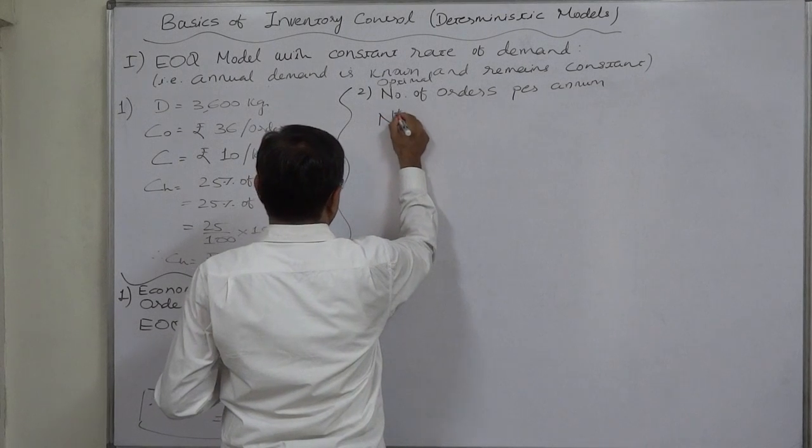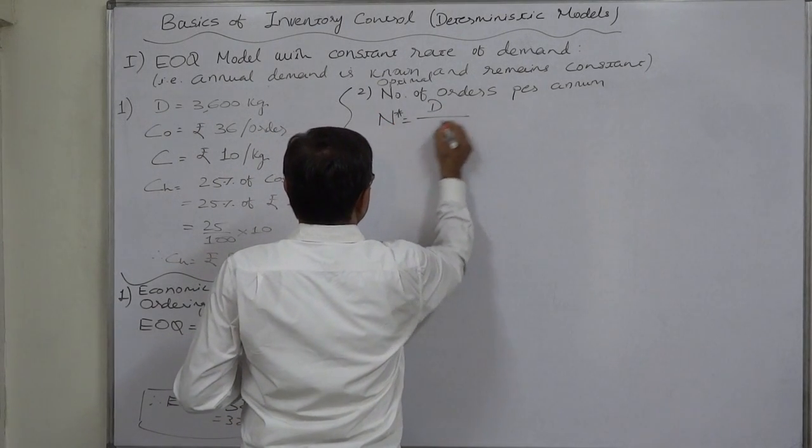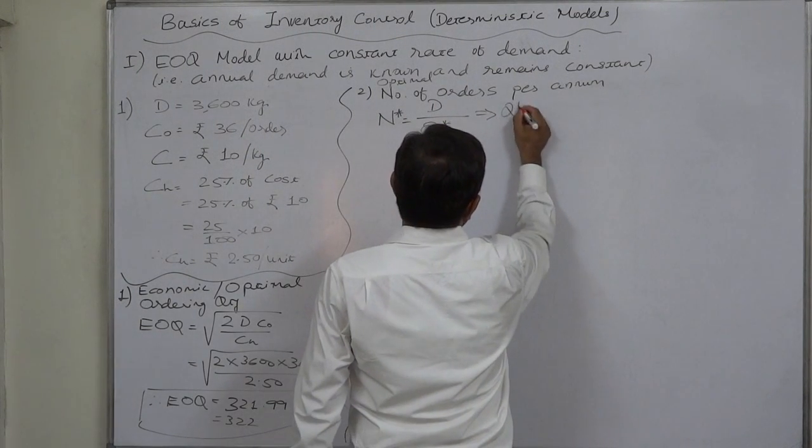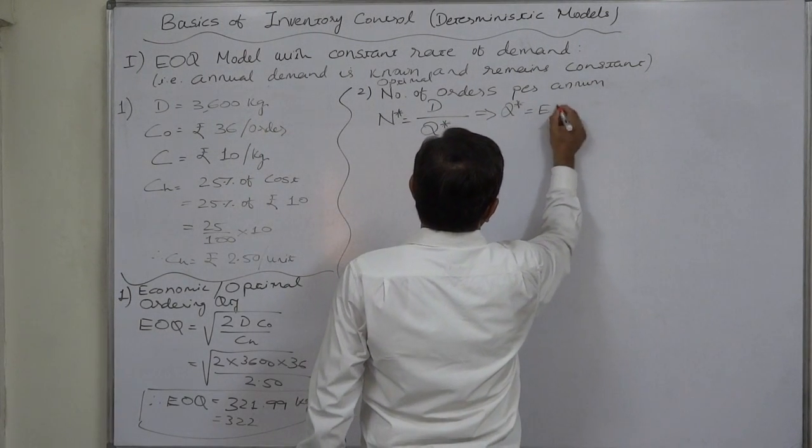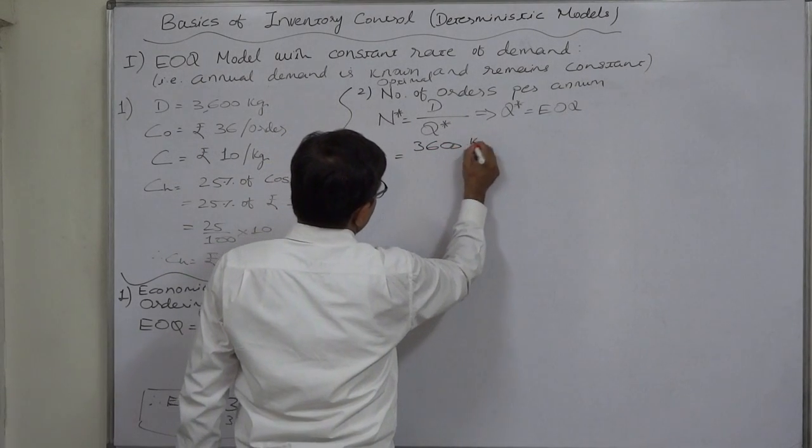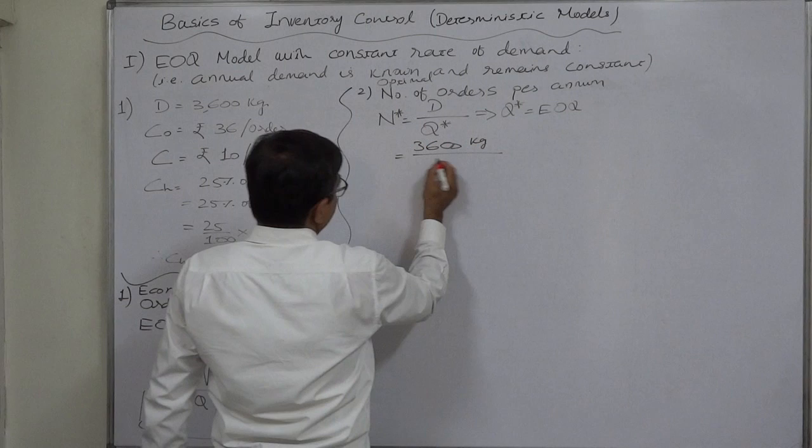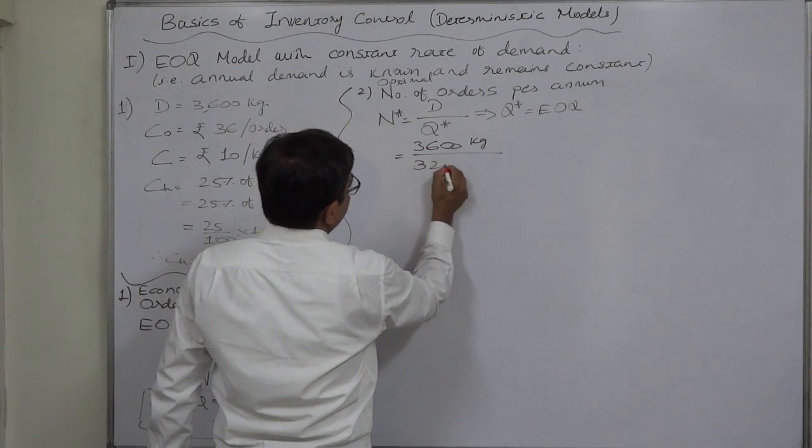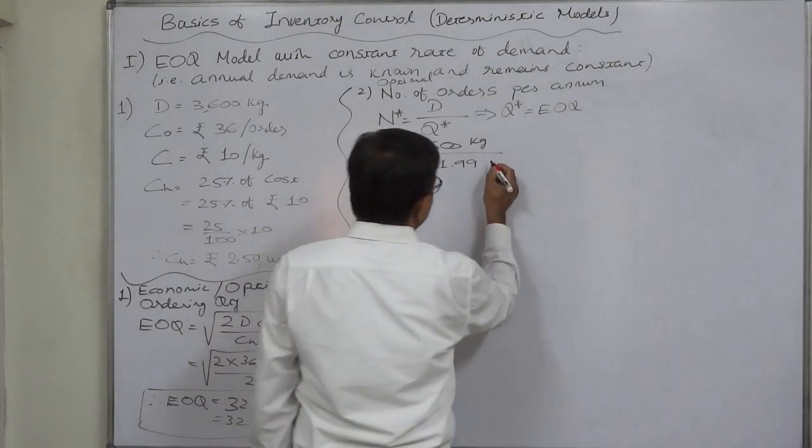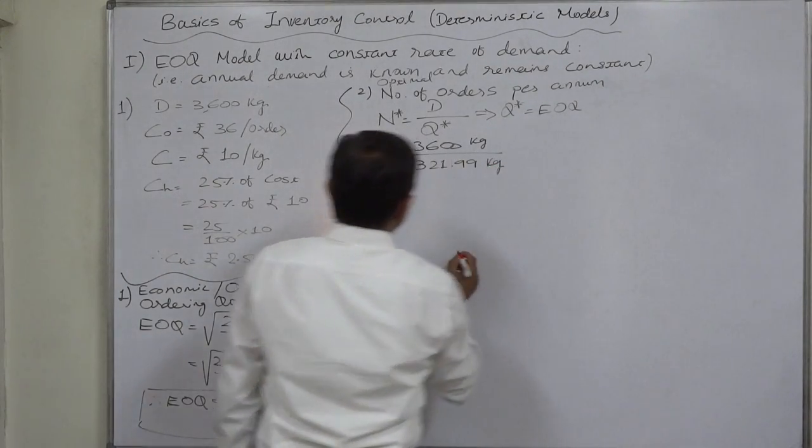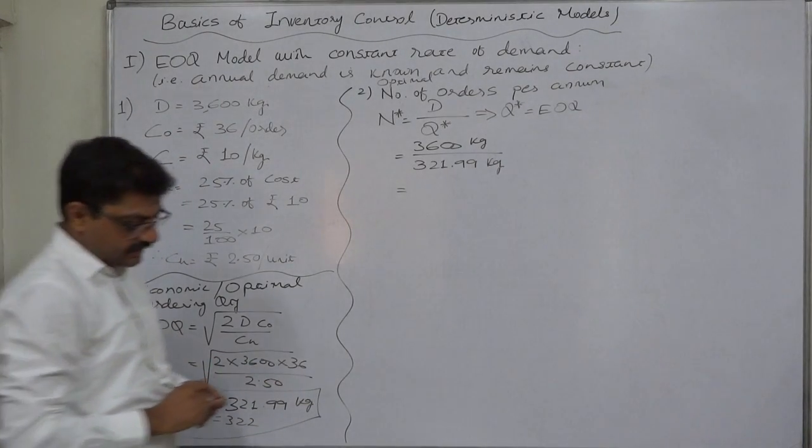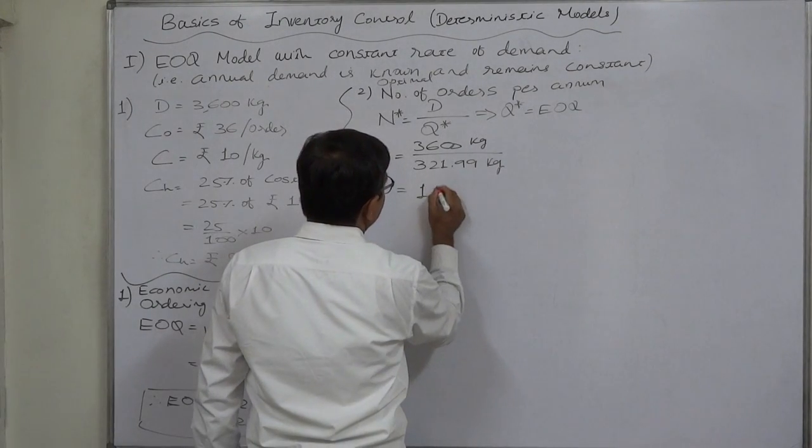N star equals to D divided by Q star. Q star here is EOQ. So, it will be 3600 kg divided by 321.99 or you can write 322 kg per order. So, this will be the number of orders and that comes to 11.18.